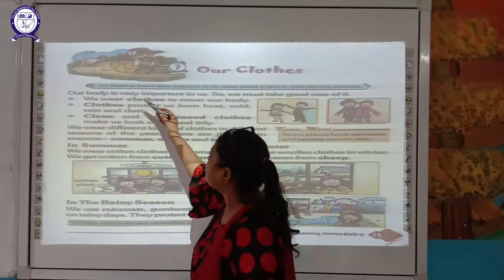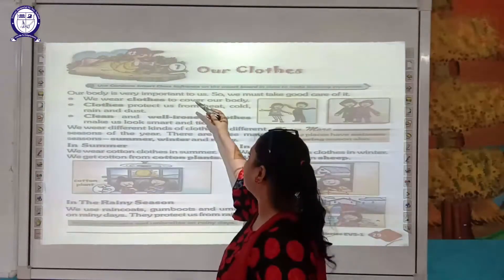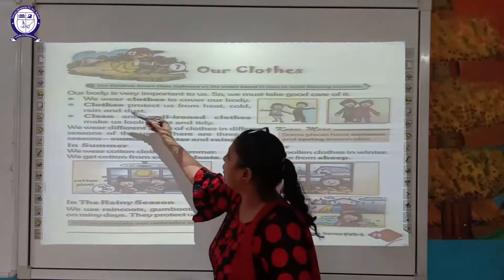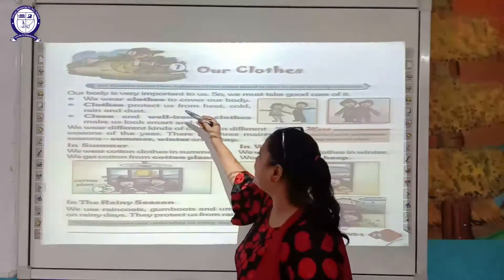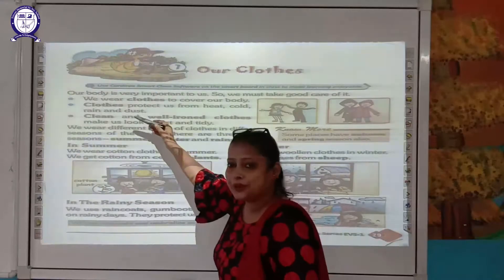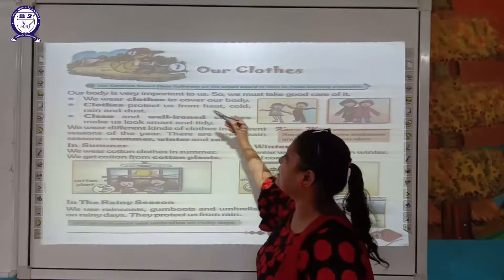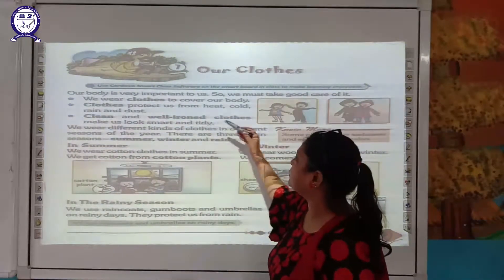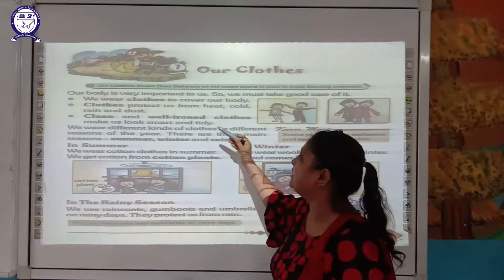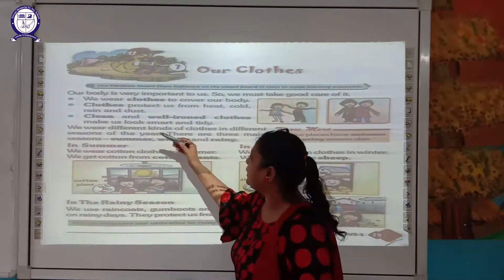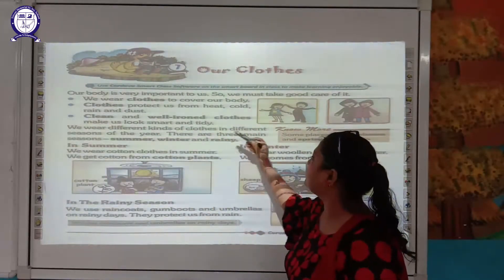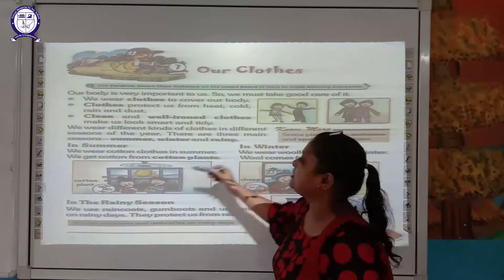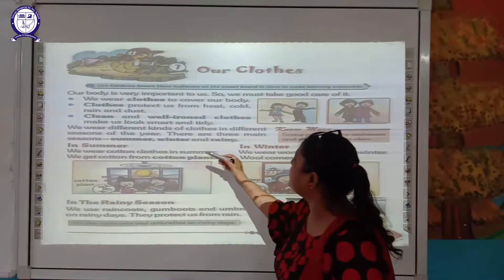Our body is very important to us, so we must take good care of it. We need clothes to cover our body. Clothes protect us from heat, cold, rain and dust. Clean and well-ironed clothes make us look smart and tidy. We wear different kinds of clothes in different seasons of the year. There are three main seasons: summer, winter and rainy.